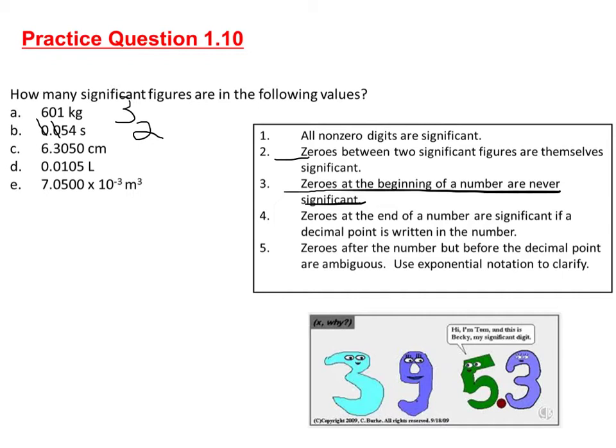C is 6.3050 centimeters. All non-zero digits are significant, so the six, the three, and the five are all significant. The zero between the three and the five is held captive, so that follows rule two.